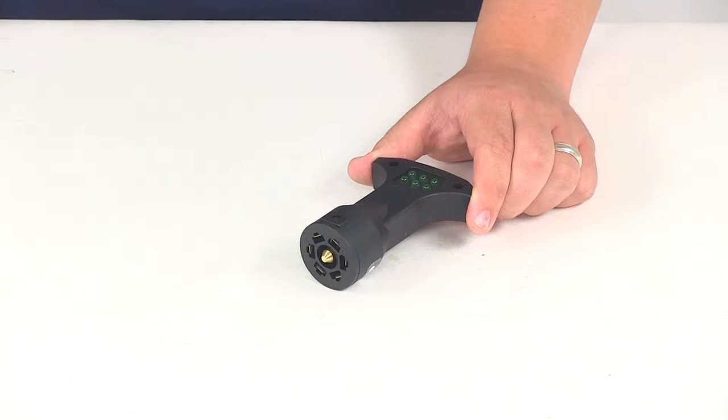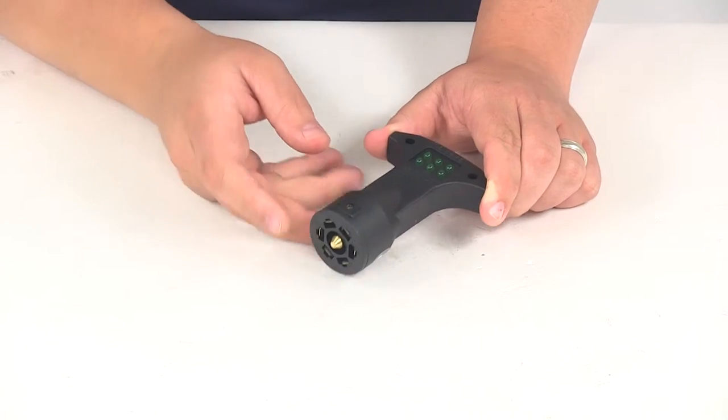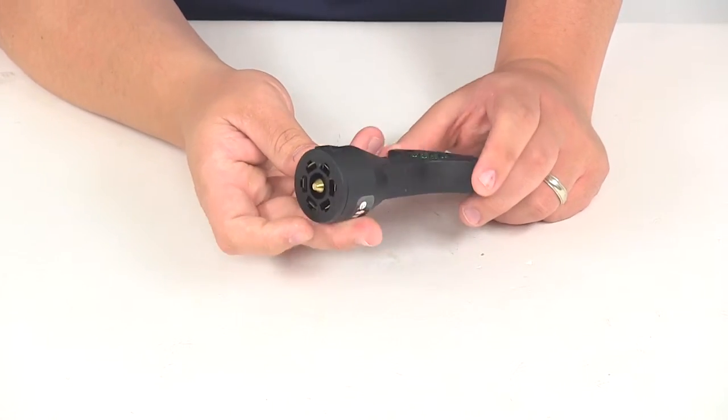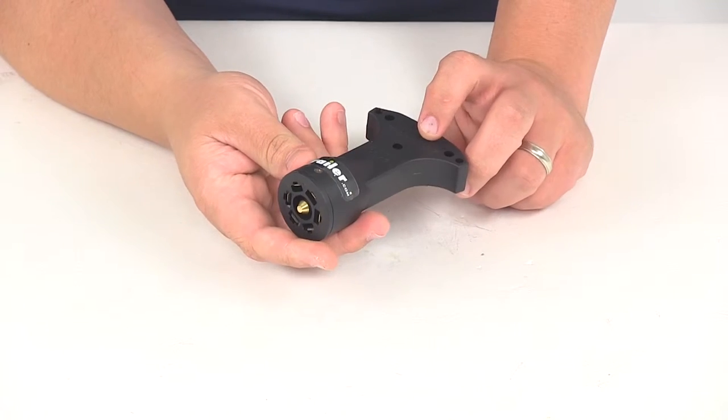Today we're taking a look at part number PK12741, the Pollock 7-way to RV socket LED circuit tester. This tester tells you which functions are working in a 7-way trailer connector.